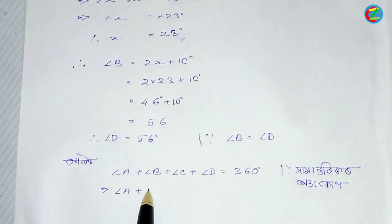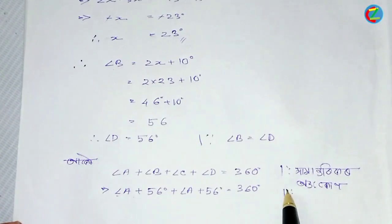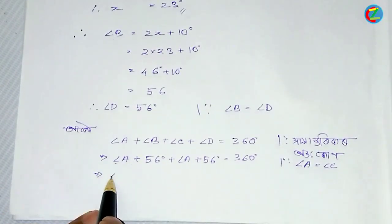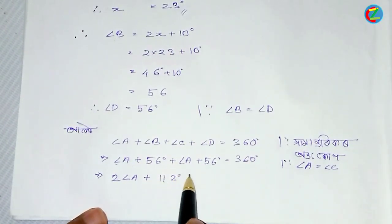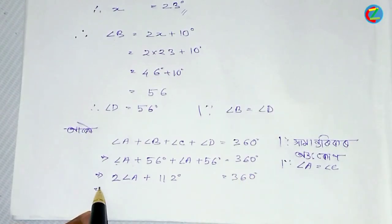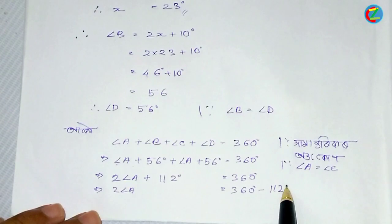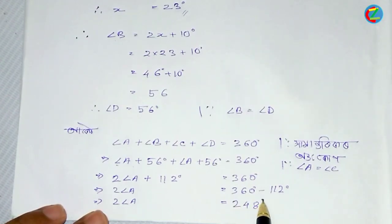In the trapezium, angle A plus 56 degrees plus angle C, we need to find. Angle A and D are 56 degrees each. So we have 360 degrees total. Let's calculate angle A and C.